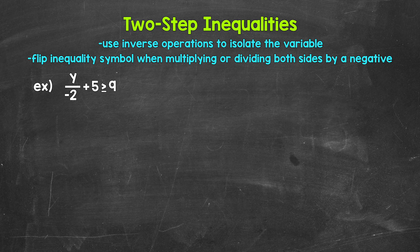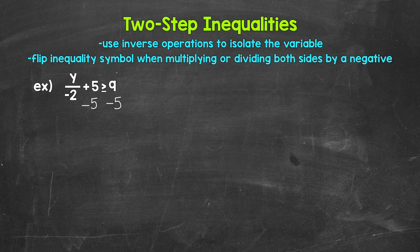The inverse operation of addition is subtraction. So let's subtract five from the left side of the inequality. Whatever we do to one side of an inequality, we must do to the other in order to keep it balanced. So subtract five from the right side as well. On the left side, these fives cancel each other out. So we have y divided by negative two is greater than or equal to, and then on the right, nine minus five gives us four.